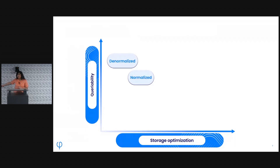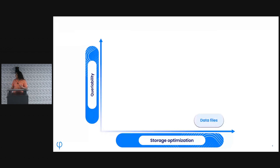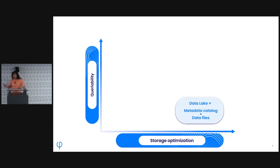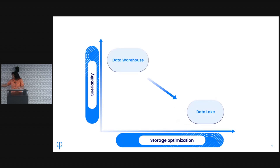There are data files like Parquet that store the actual data, and these are more storage-optimized, but you need to know the mapping of what data lives in which files — so they're less queryable. If you add a metadata catalog on top of your data files that tracks where different pieces of information are, you get a data lake. But going from a data warehouse to a data lake, you've made a trade-off of queryability for storage optimization.